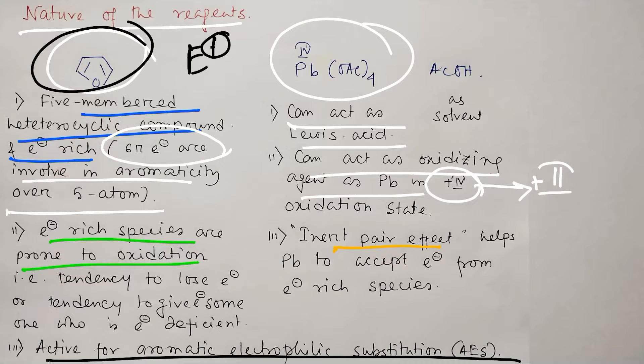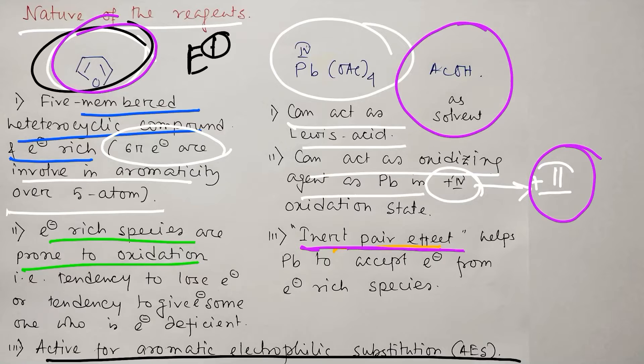What do I mean by the statement inert pair effect? It means that due to lanthanide contraction, after F shell through the periodic table, if you go before lead, the lanthanide series come. So consequently, because of the poor shielding of the 4f orbitals, the outermost valence electrons are attracted strongly for lead. That phenomena makes the lead 4+ susceptible to take electron and get stabilized in +2 oxidation state. That's why lead is a strong oxidizing agent. It has a tendency to take electron from some electron rich species and in this case, the species is furan. And the acetic acid is used as a solvent in this reaction. So let us discuss the mechanism.